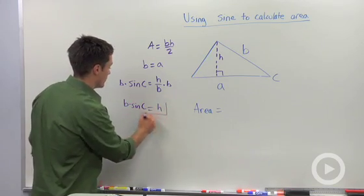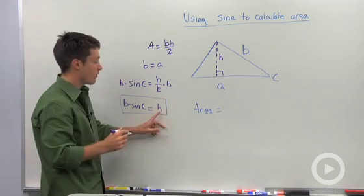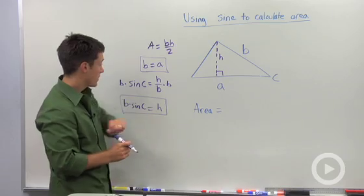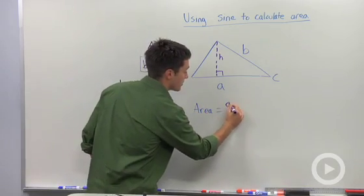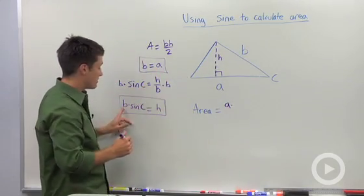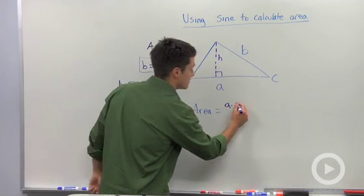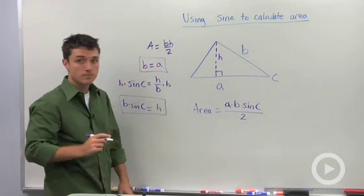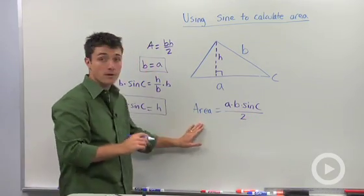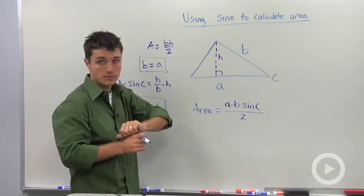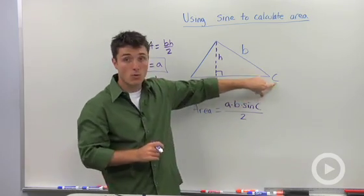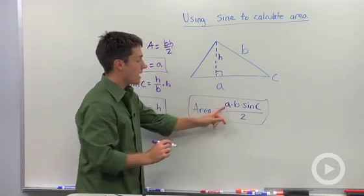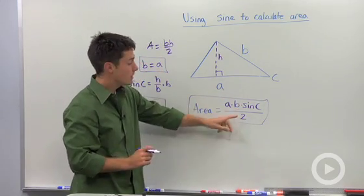Substituting B times sine of C for H, and A for the base into the area equation, we find that the area of this triangle is A times B times the sine of C, all divided by 2. So if you want to calculate the area of any triangle and you don't know the height, all you need is one angle and its two included sides, and you can use this formula: A times B times the sine of C divided by 2.